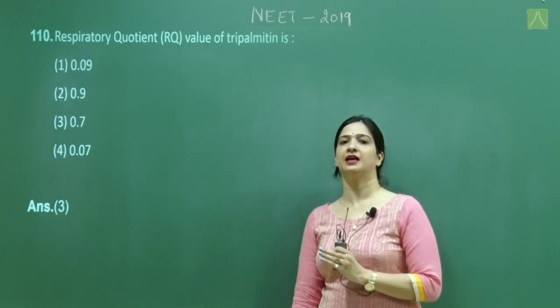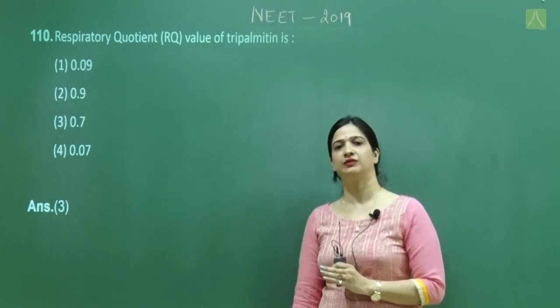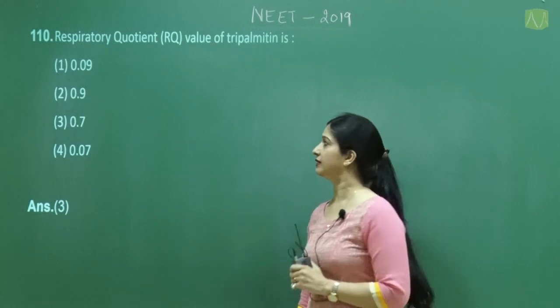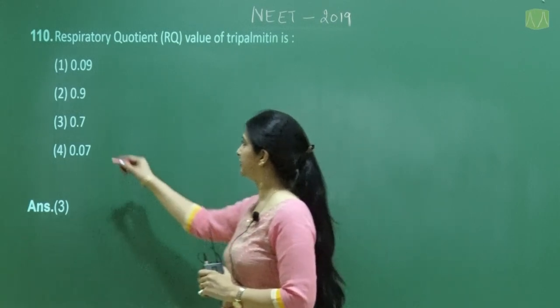Question number 110: The respiratory quotient (RQ) value of tripalmitin. Tripalmitin is a fatty acid; for fatty acids the RQ value is generally less than 1. The correct option is 0.7.